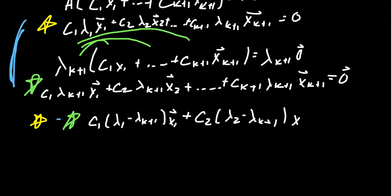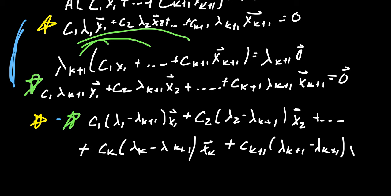You're going to get X2 right here. And then you continue on down this pattern until you end up with some C K. And then you're going to get lambda K minus lambda K plus 1, X K. And then the last term, you're going to get a C K plus 1 times lambda K plus 1, minus lambda K plus 1, times X K plus 1. And this should all equal zero.